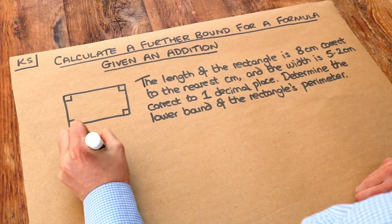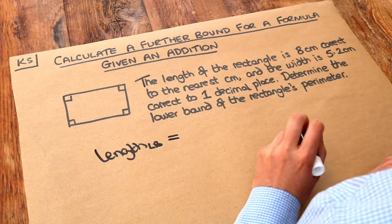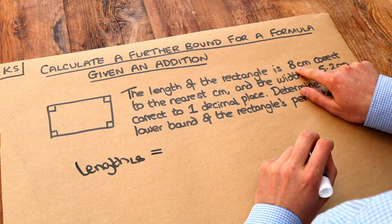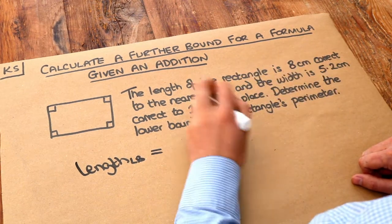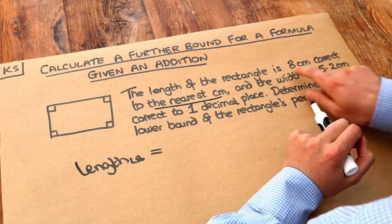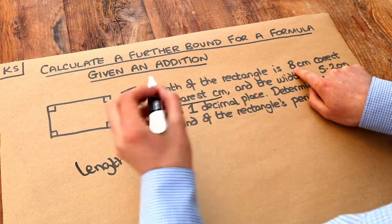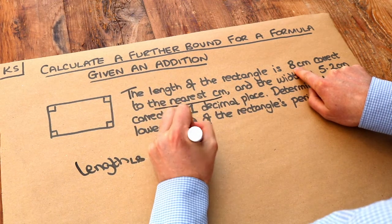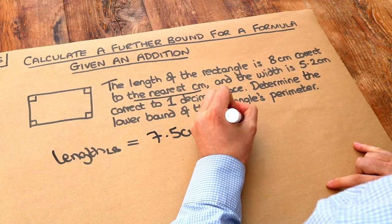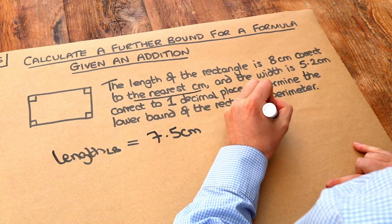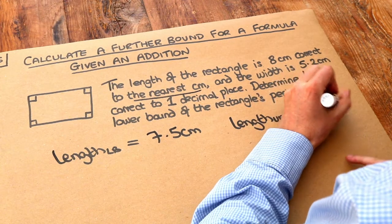For the length, let's find the lower bound and the upper bound — I'll use LB for lower bound. Since it's 8 centimetres correct to the nearest centimetre, we subtract half the accuracy: half of a centimetre is 0.5 centimetres, so 8 minus 0.5 is 7.5. If that doesn't make sense, please watch my video on calculating bounds first. The upper bound of the length is 8.5 centimetres.